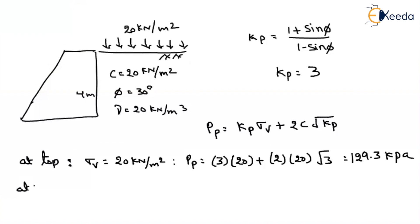What about at bottom? At bottommost layer, what about the vertical stress? Because of the surcharge and also because of the unit weight of the soil. Because of the surcharge, it will always be constant, plus because of the unit weight, gamma into the height of the retaining wall 4. So vertical stress is 20 plus 80, equals 100.